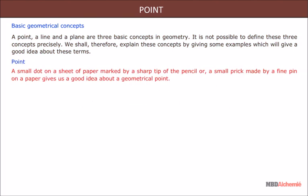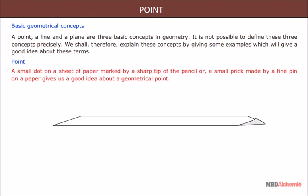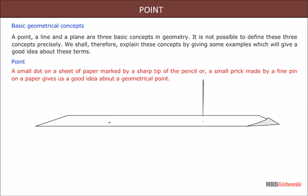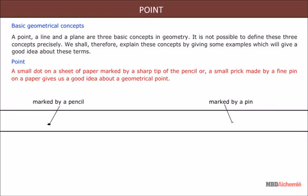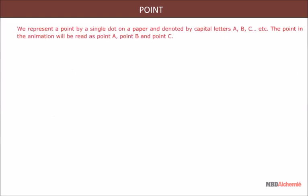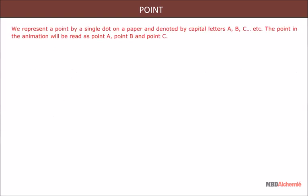We shall explain these concepts by giving some examples which will give a good idea about these terms. A small dot on a sheet of paper marked by a sharp tip of pencil, or a small prick made by a fine pin on a paper, gives us a good idea about a geometrical point. We represent a point by a single dot on a paper and denote it by capital letters A, B, C, etc.